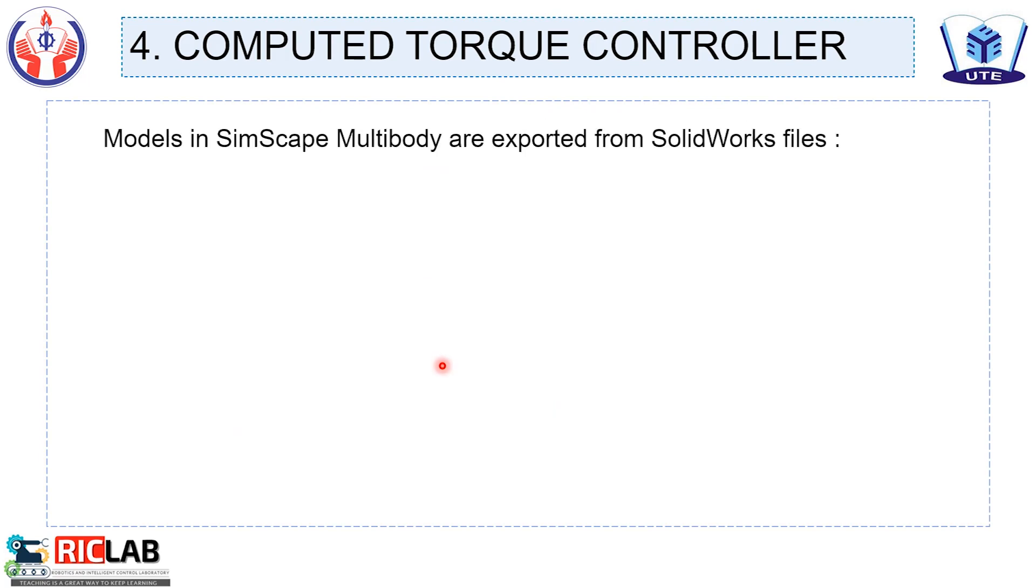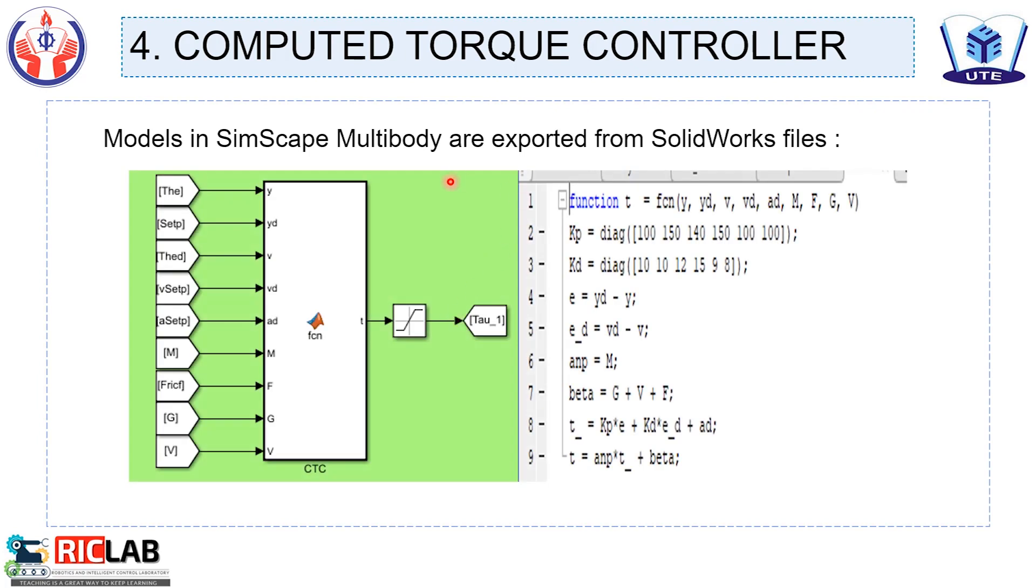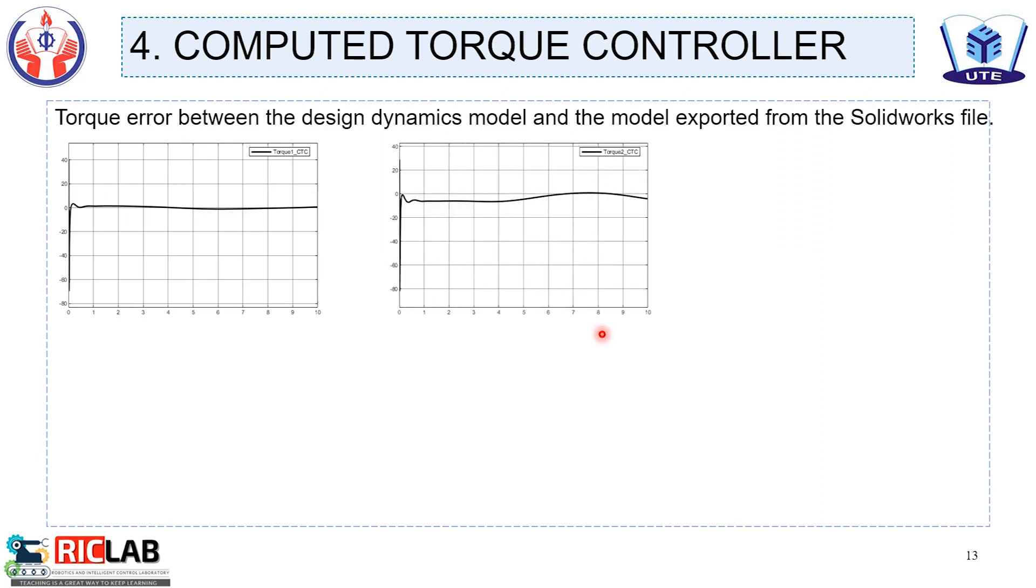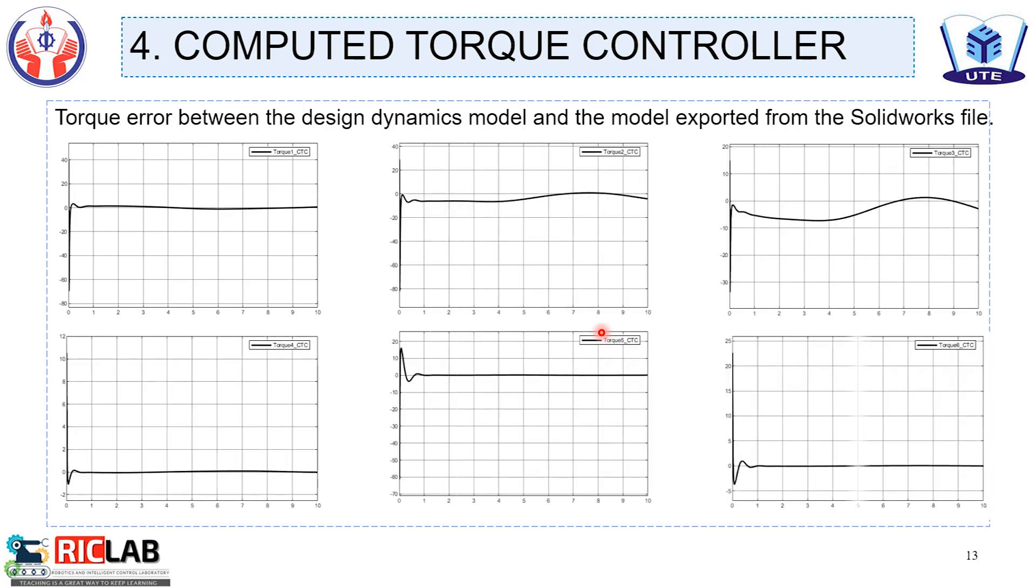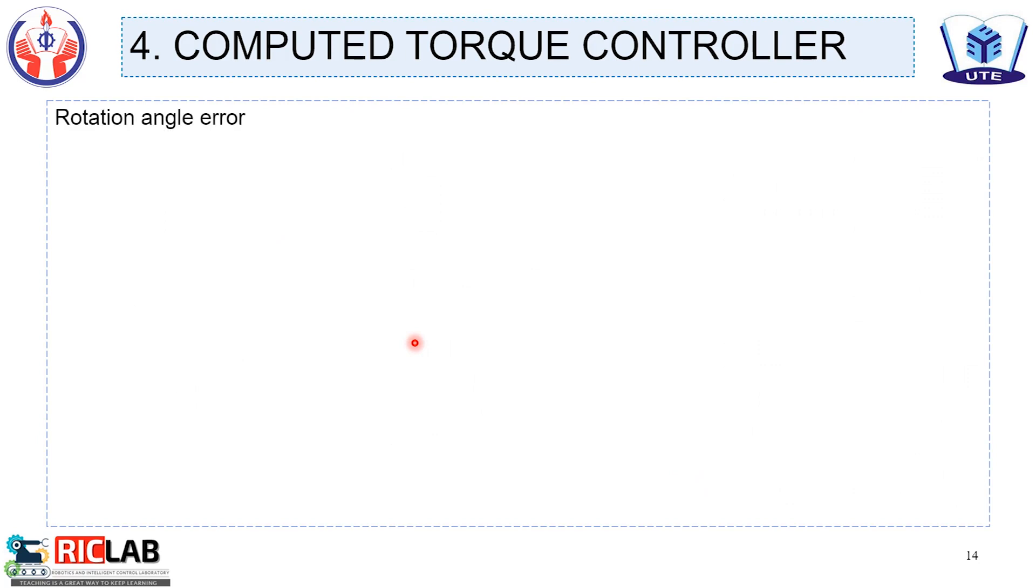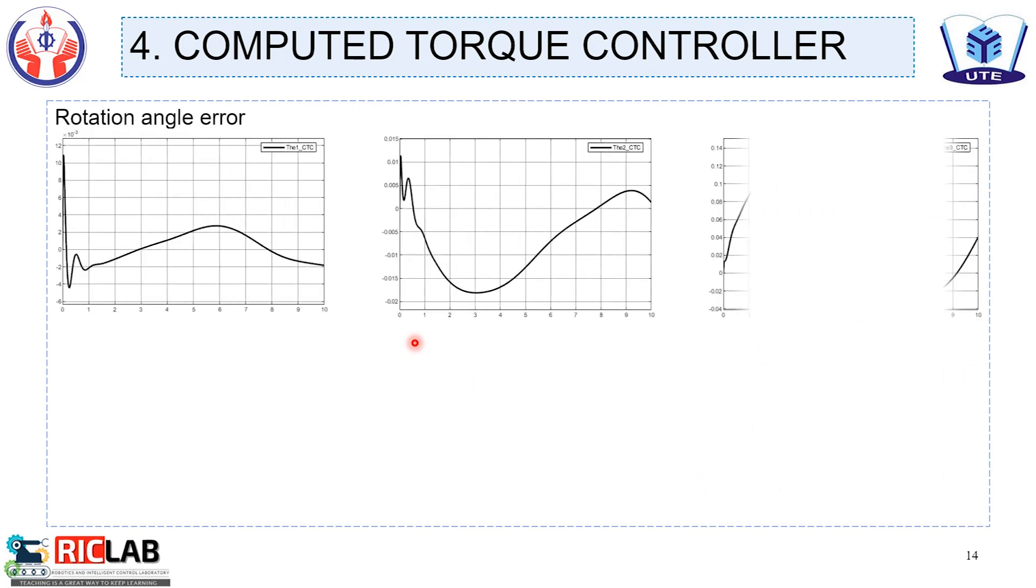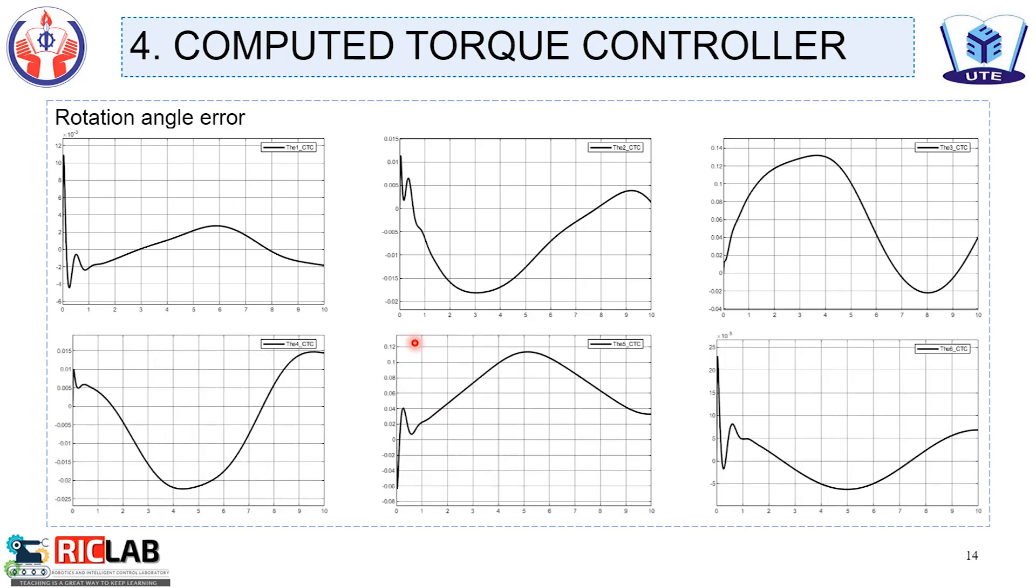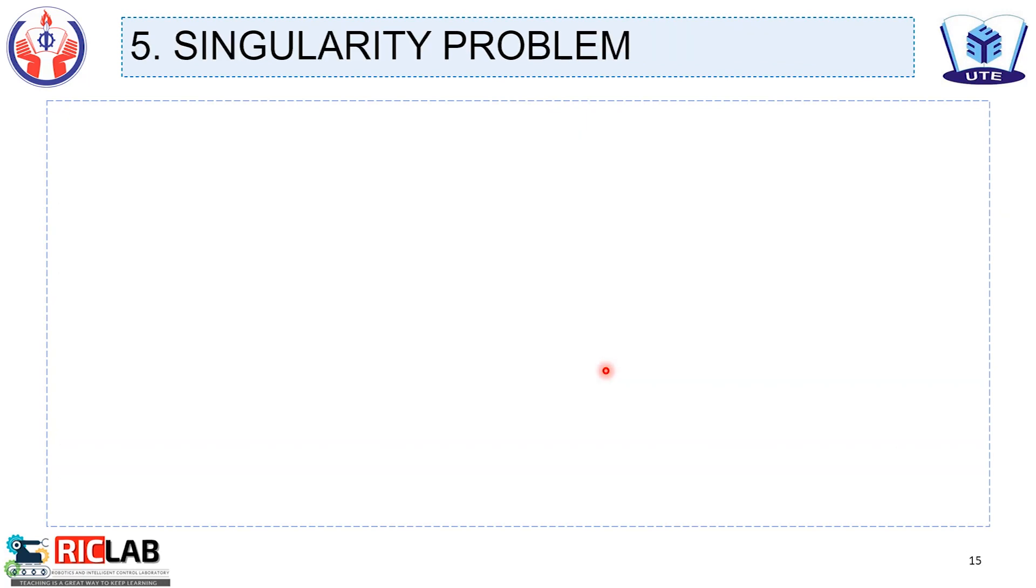The models in the Simscape multibody are exported from SolidWorks file. Toggle outputs between the dynamic model and the model exported from the SolidWorks file. The rotation angle outputs.